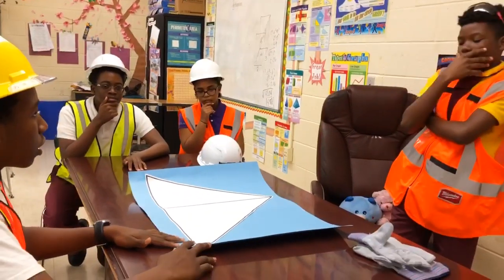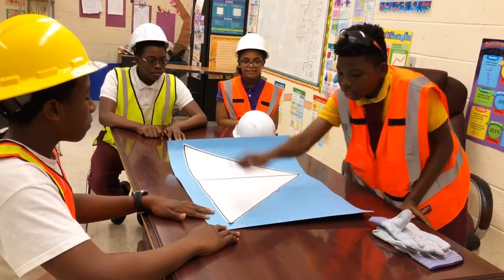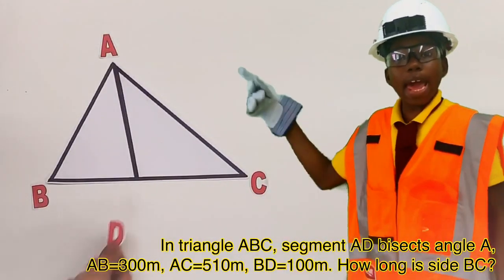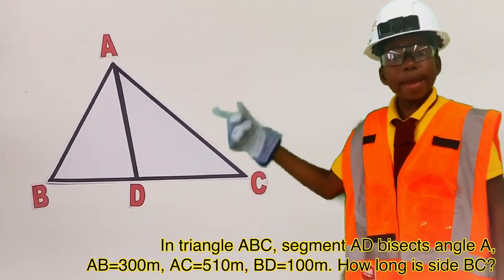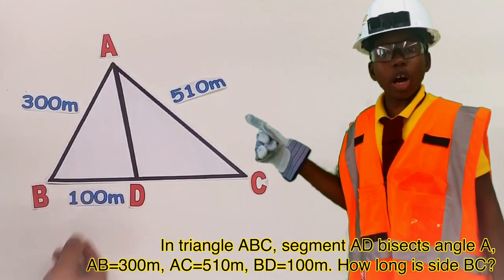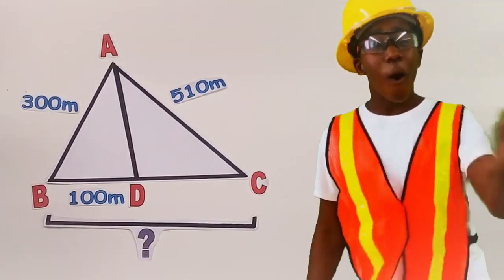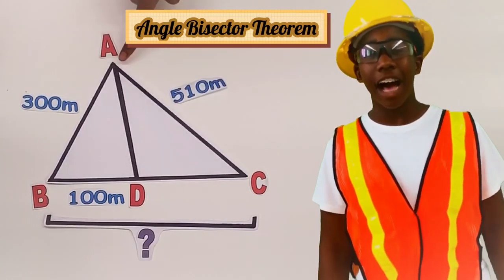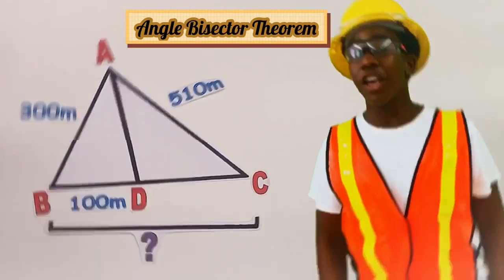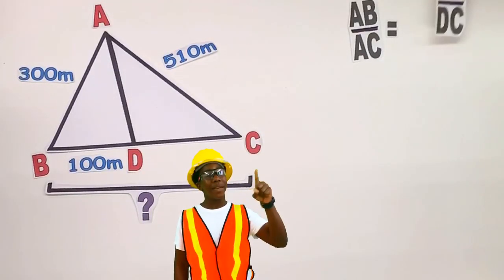Let me think. Oh yeah! We can assign points A, B, C, and D. In triangle ABC, the pipe segment AB bisects angle A. AB measures 300 meters, AC measures 510 meters, BD measures 100 meters. How long is side BC? According to the Angle Bisector Theorem, if a ray bisects an angle of a triangle, then it divides the opposite side into segments that are proportional to the other two sides. So the ratio of side AB to side AC is equal to the ratio of segment BD to segment DC.